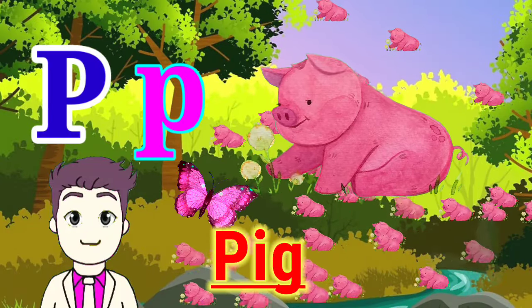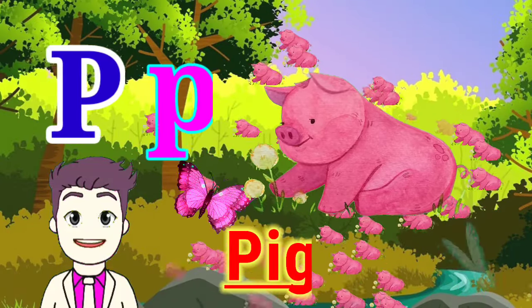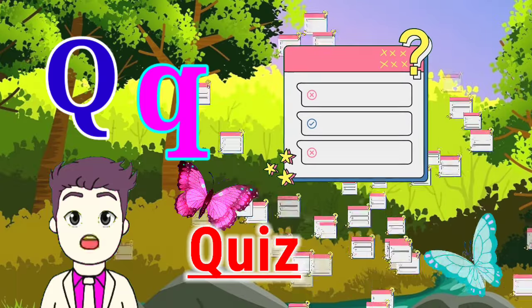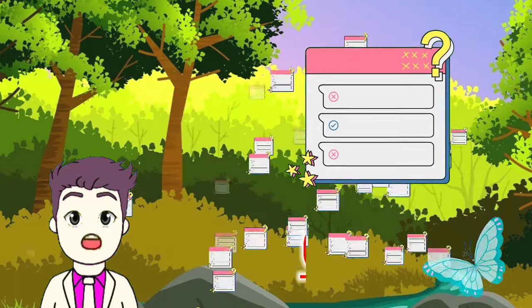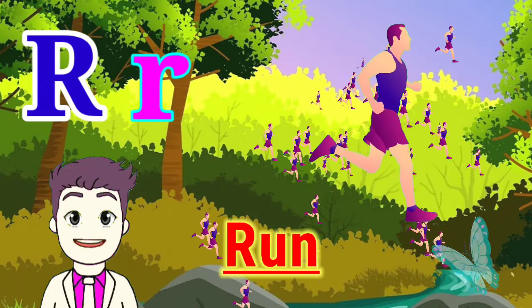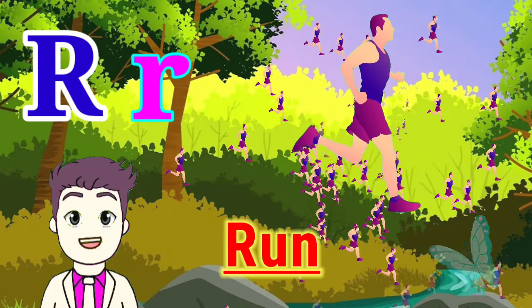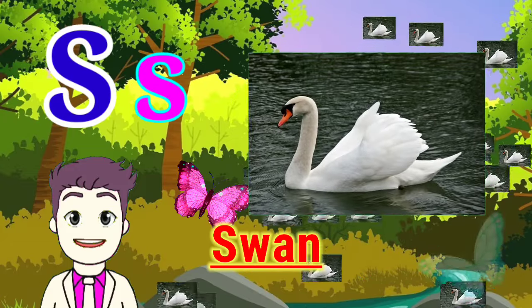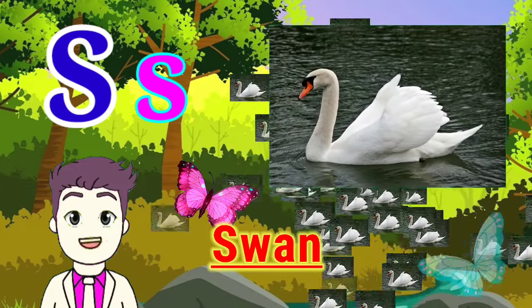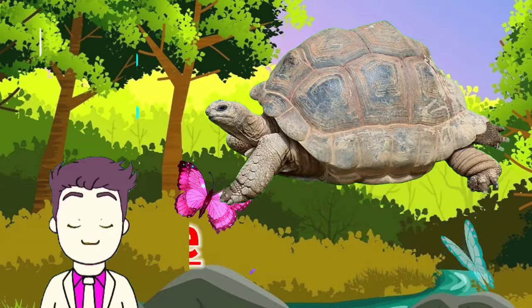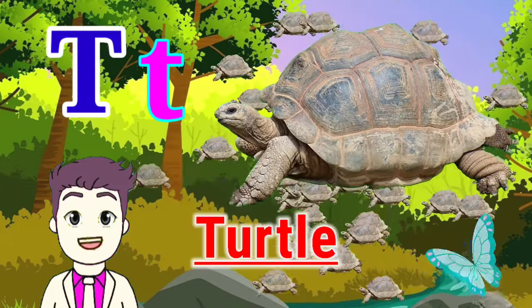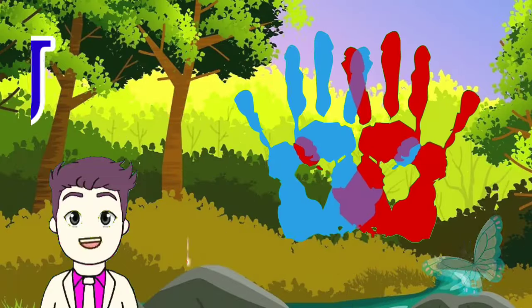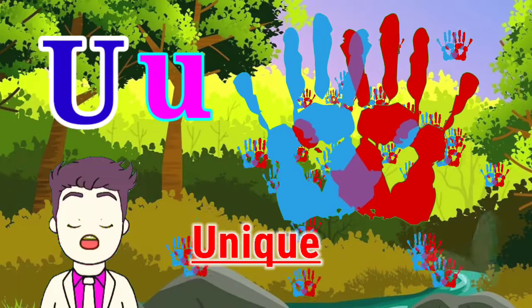P for pig. Q for squid. R for run. S for sun. T for turtle. U for unique.